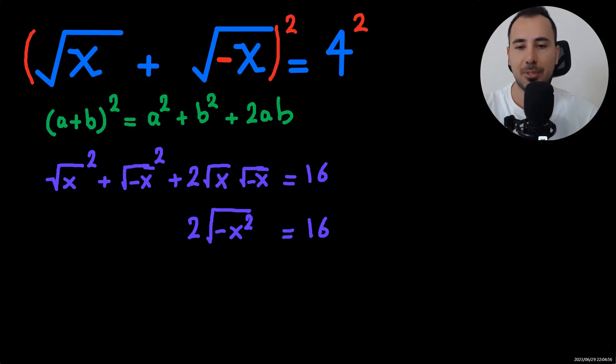So this is what we get. Let's simplify both sides of the equation by 2. This is what we're going to get.